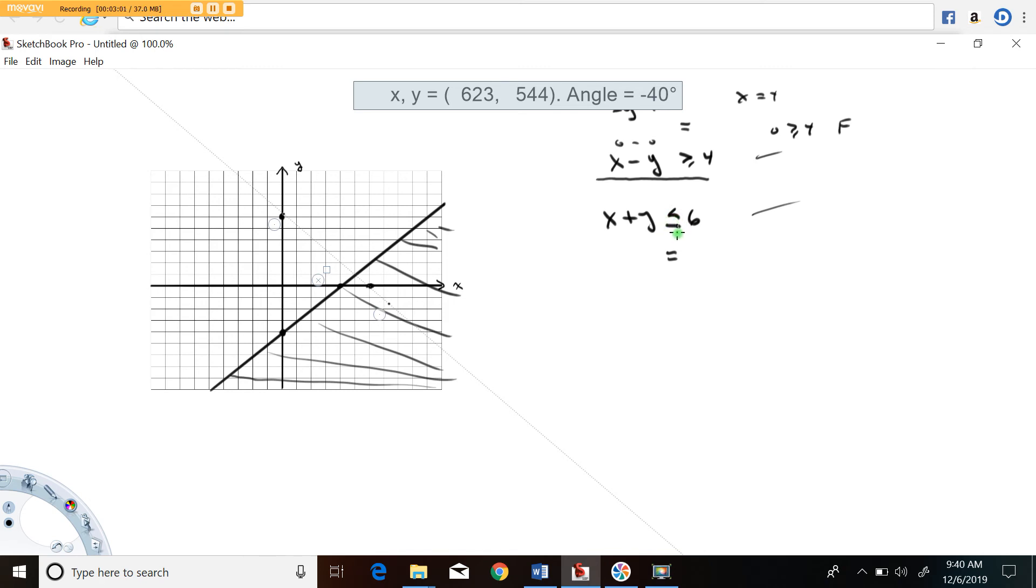Again taking note this actually says equality so we're going to use a solid line. There we go. Had this said strictly less than you would put a dashed line.